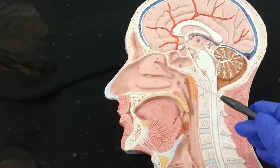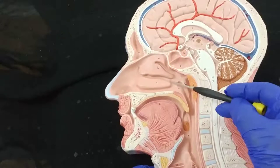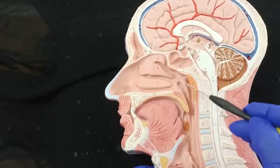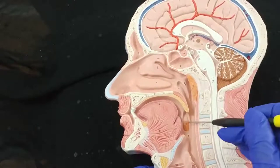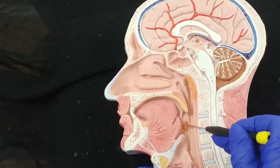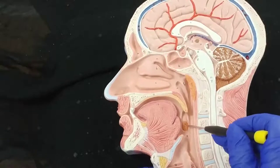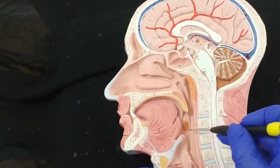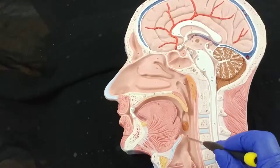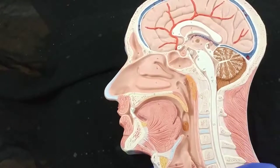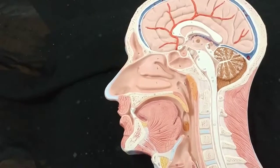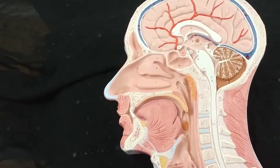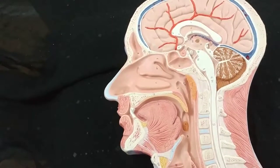This is the nasopharynx and this is the oropharynx. In the oropharynx, we have the palatine tonsil. And the laryngopharynx is behind the larynx — it continues as the esophagus.